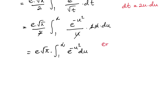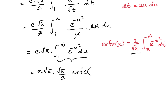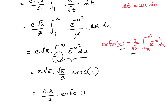We recognize this in terms of the complementary error function. The erfc of x is defined as 2 over square root of pi times the integral from x to infinity of e to the minus t squared dt. So the integral from 1 to infinity of e to the minus u squared du equals square root of pi over 2 times erfc(1). Therefore the final answer is e times pi over 2 times erfc(1), the complementary error function evaluated at 1.